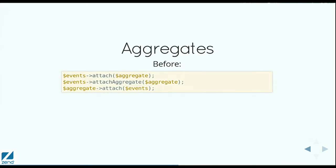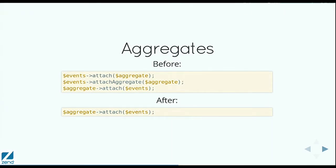The other thing that we did was change the aggregates. Before, there were three different ways to attach an aggregate: you could say events attach, you could use events attach aggregate, or you could use aggregate attach and pass it the events instance. We decided that the Event Manager doesn't care if it's an aggregate or not because all it cares about are the listeners. So we're just doing one signature. This signature has always existed, which means you can make your code forwards compatible now just by using this signature instead of the other two. So we're thinking ahead: how do we make it simpler to use, but also, what can we do in the old version to make it easy for you to go forward?